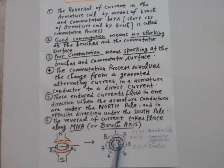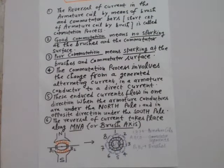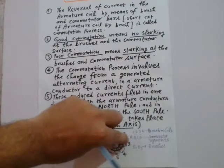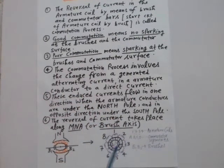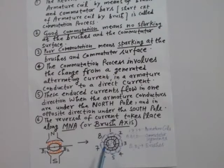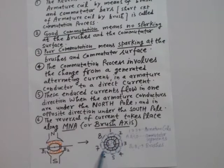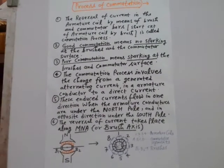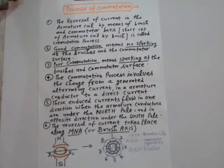I have drawn this middle section separately, showing the commutator with its segments represented by A through H, and armature coils labeled 1 through 7. We will now discuss in great detail how the commutation process happens.